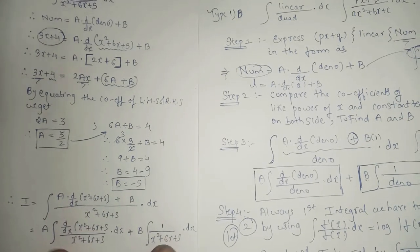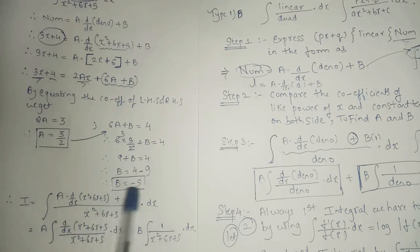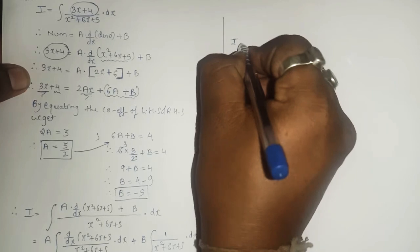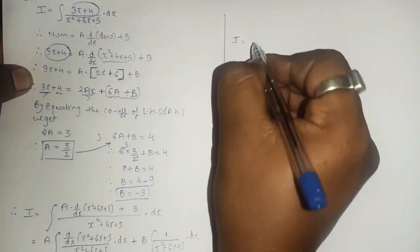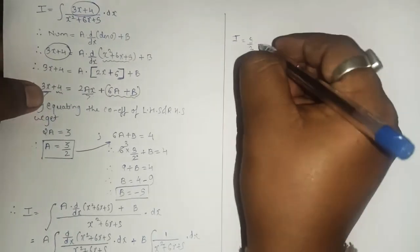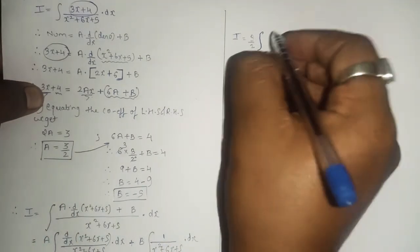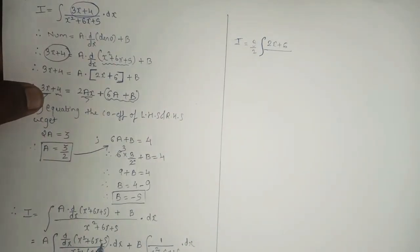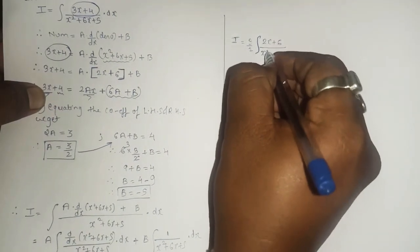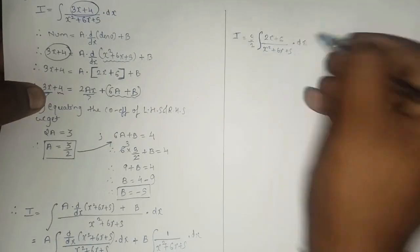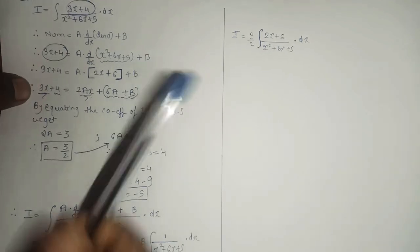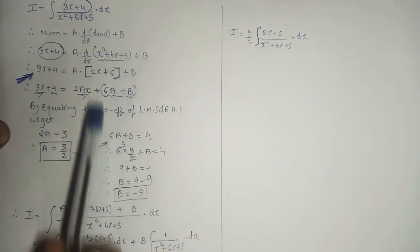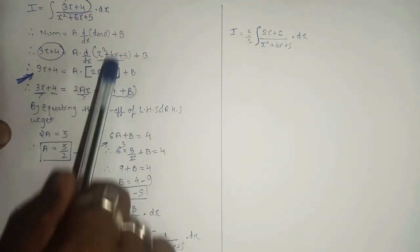Substitute the values of A and B. A was 3 over 2, so we write: I equals 3 over 2 times integral of 2x plus 6 upon x squared plus 6x plus 5 dx. For the second part, B was minus 5, so we write minus 5 times integral of 1 upon x squared plus 6x plus 5 dx.